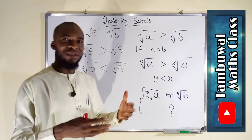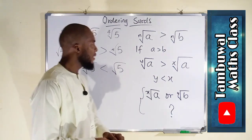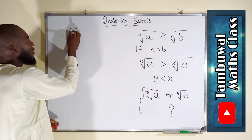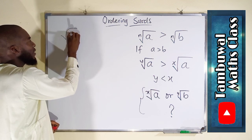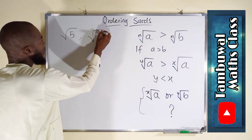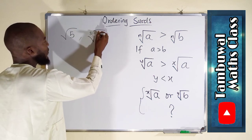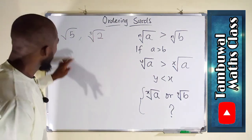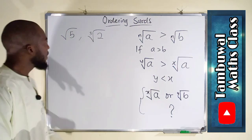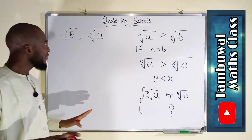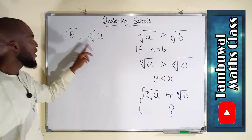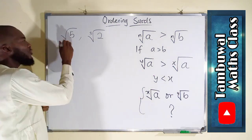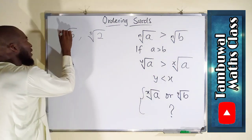Now let us consider the fundamental case — what if the radicands and degrees are entirely different? Suppose we want to compare square root of 5 and cube root of 2. They are entirely different: this is a square root, that is a cube root; one has radicand 5, the other 2. How can we determine the greatest? Naturally a square root has degree 2.